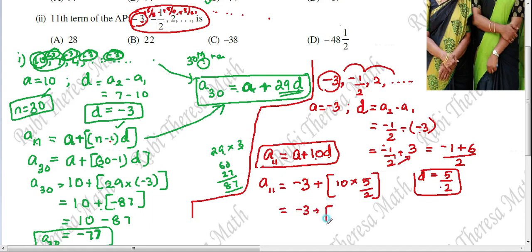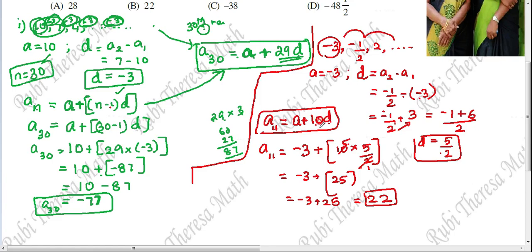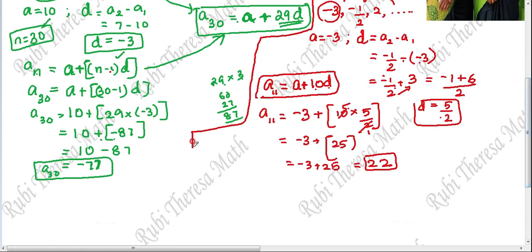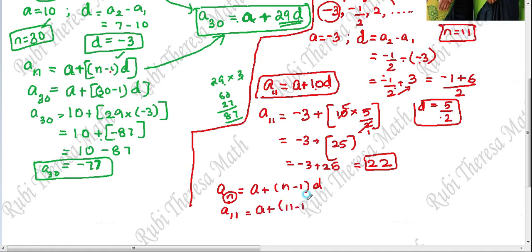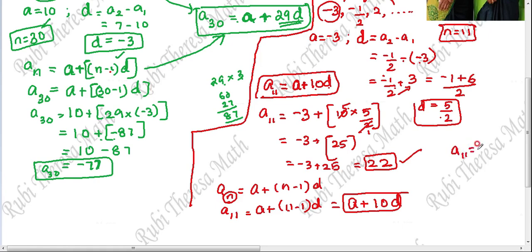Substituting: A11 equals minus 3 plus 10 into 5 by 2. Simplifying, 10 divided by 2 is 5, so 5 into 5 equals 25. Then minus 3 plus 25 equals 22. So A11 equals 22. The 11th term of this sequence is 22, which makes Option B the correct answer.